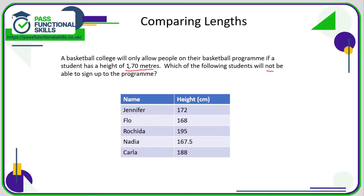The problem here — not a huge problem really — is that 1.70 is in meters, but these heights here are in centimeters. So either we can convert all of these heights in centimeters to meters, or we can convert 1.70 meters into centimeters. I'm going to convert 1.70 meters into centimeters, because then I only have to convert this one number, whereas the other way I'd have to convert five heights.